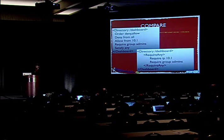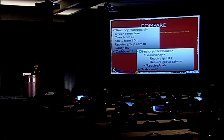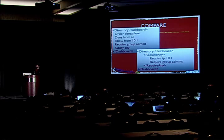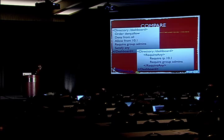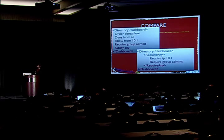Comparing these two blocks, the line count is essentially one line less. But it's not about the line count so much as about the clarity of expression. We don't waste time on the seemingly unnecessary deny and order lines. We just get straight to the point: RequireAny, one of these two, and then we put that in a directory block.